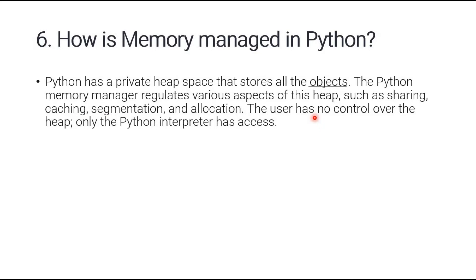Question number six: how is memory managed in Python? Python has a private heap space that stores all objects. The Python memory manager regulates various aspects of this heap such as sharing, caching, segmentation, and allocation. The user has no control over the heap — only the Python interpreter manages memory.